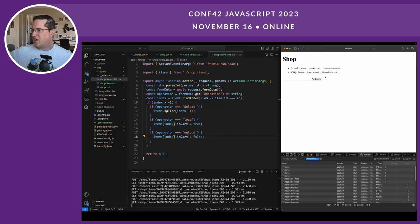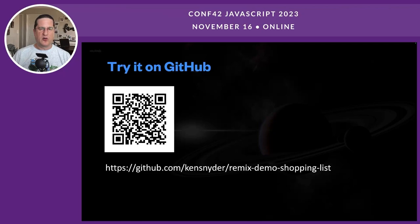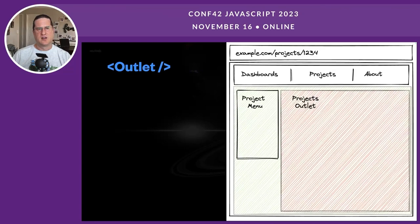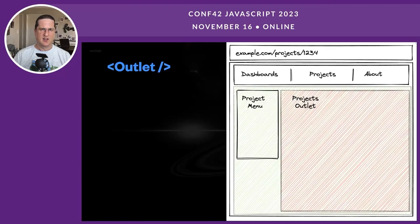If you're interested in this code, it's available on GitHub at the URL and QR code shown. One more thing about outlets: outlets can represent a series of URLs. In this app, general information like the header appears at the root route. When you load slash projects, you get a list of projects in a nested area. If you click on a project, you get to the slash 1234 part of the URL, which renders inside the projects area. This lets you organize code simply for parent-child relationships — it's a nice feature for those situations.